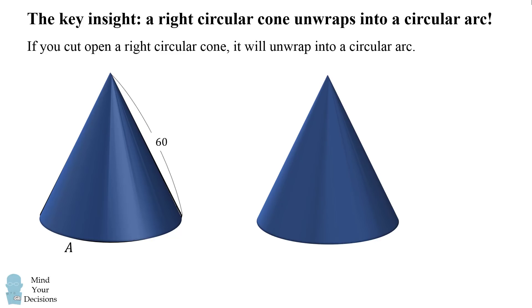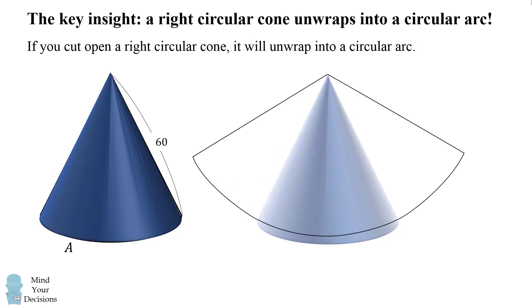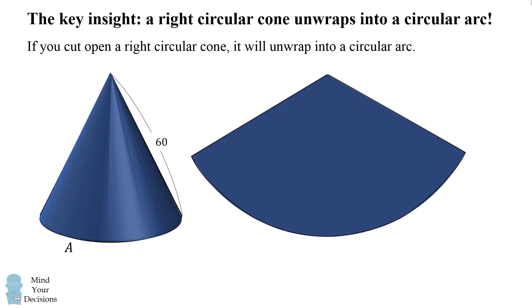So let's imagine we're cutting this cone vertically in the front. What will happen if we unwrap the cone? What will happen if we can make it a two-dimensional object? Wow! So this cone turns into a perfect circular arc.